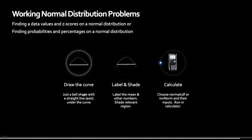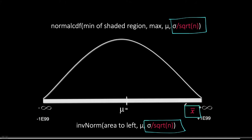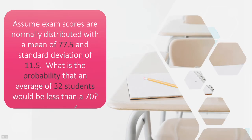With that in mind, we can work some problems using the same three-step process as last time: first, drawing the curve — and if you've printed the Draw Me a Picture document you've already got that done; second, labeling and shading; and third, calculate. Don't forget that we have sigma over the square root of n when we get to the calculate step. These data values won't represent a single data value but will represent a mean of a whole bunch of data values — whatever our sample size is.